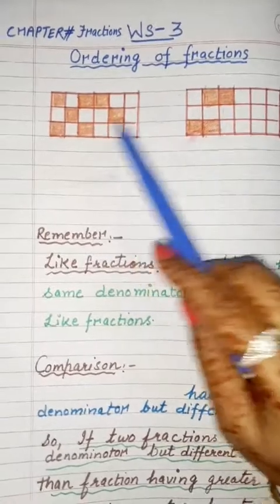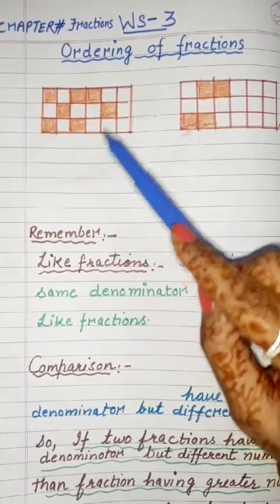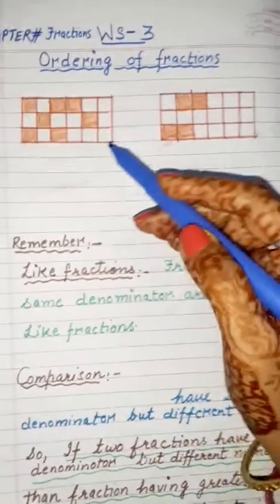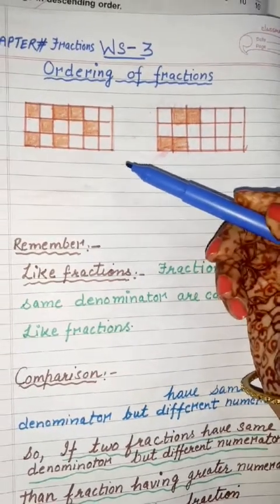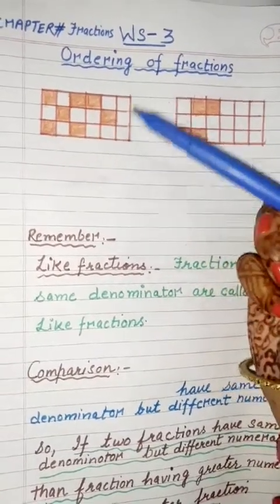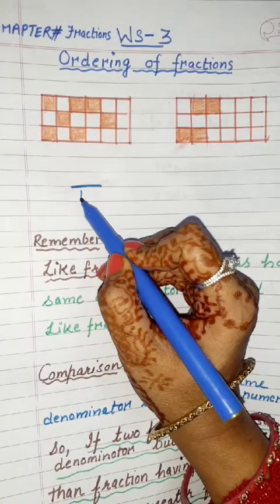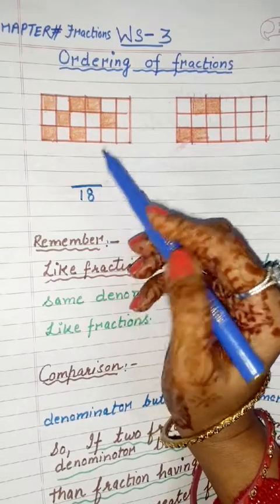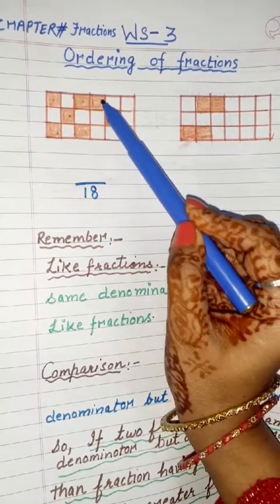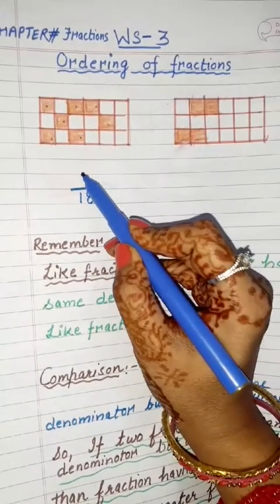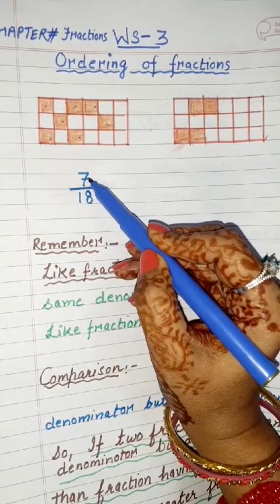Here I have two figures and in these two figures I have shaded a few boxes. In the first figure, let us write the fraction of the shaded portion. There are 18 total boxes, so we write 18 as the denominator. Counting the shaded boxes: 1, 2, 3, 4, 5, 6, 7. So the numerator is 7, and the fraction is 7/18.